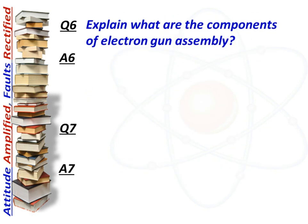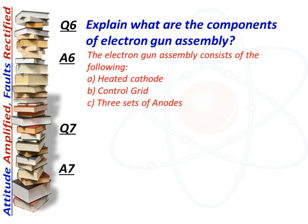Next question: what are the components of the electron gun assembly? Answer: The electron gun assembly consists of the following: a heated cathode, a control grid, and three sets of anodes.